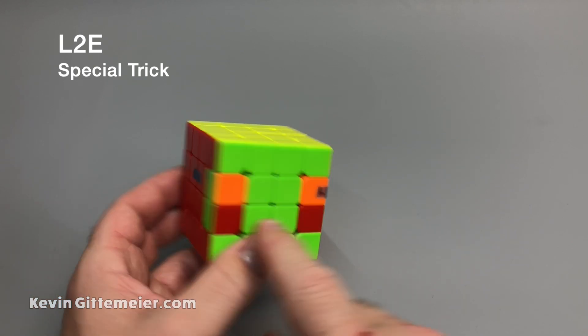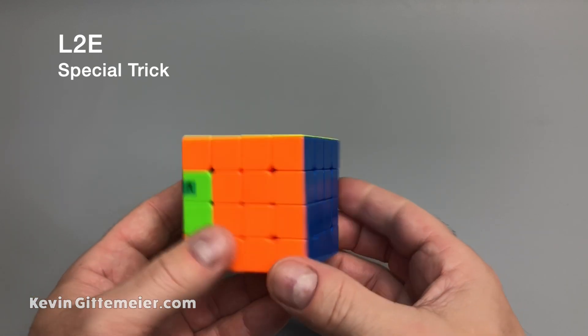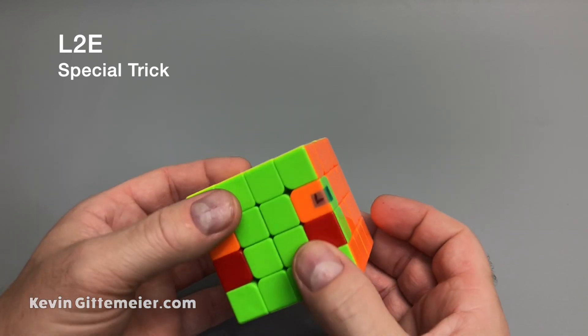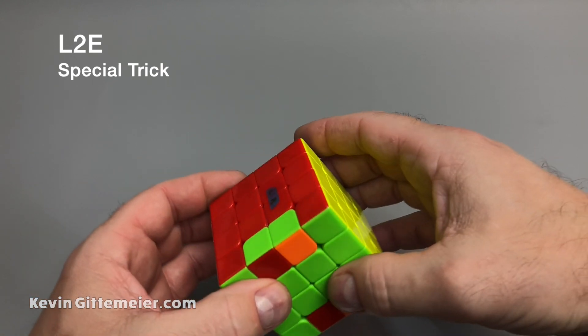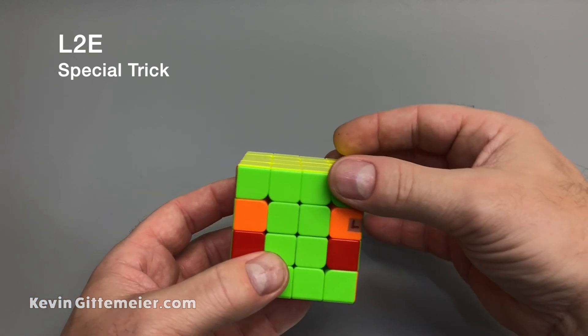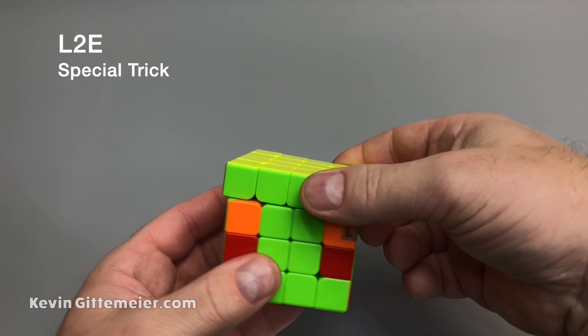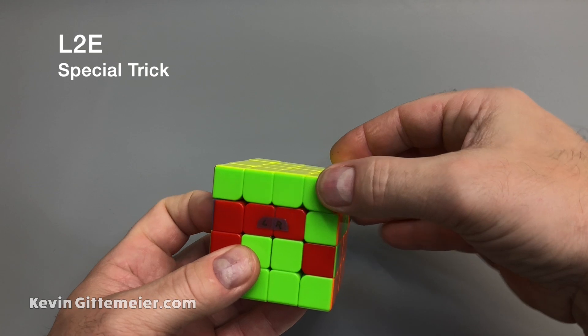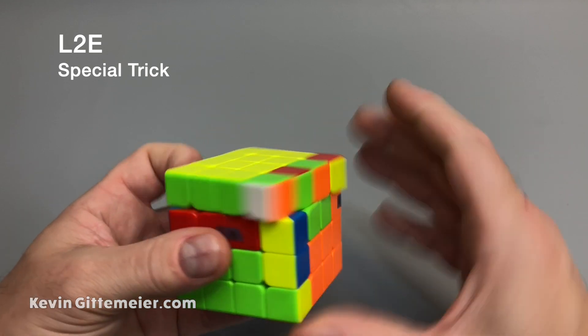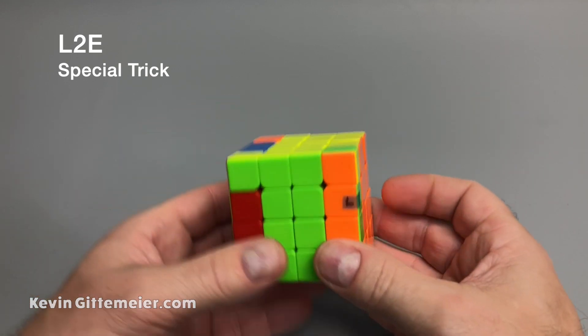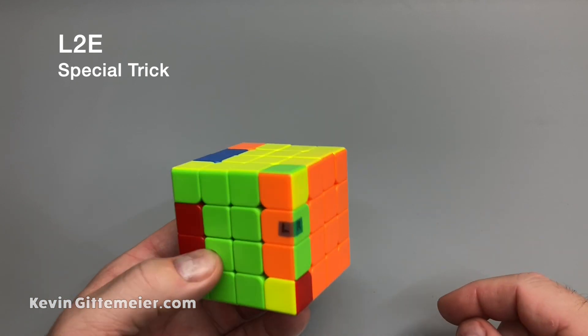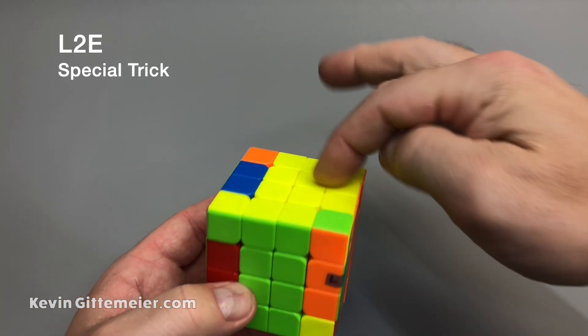All right, so we're going to do a few last two edges examples on this demo cube, but I'm going to show you a few little tricks. So instead of just splitting the cube like this, we're only going to split a slice. Okay, so again, I'm just going to split this slice, flip that edge pair, and then return this slice. So it solved the last two.